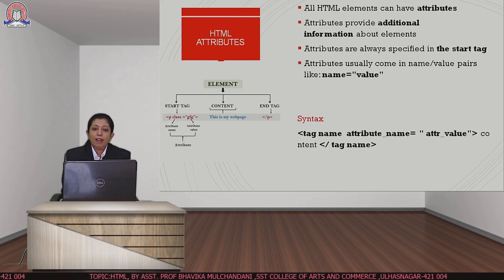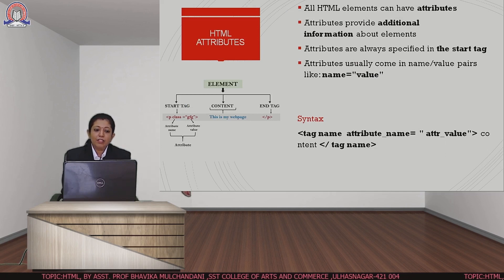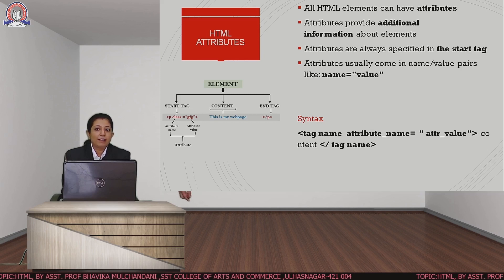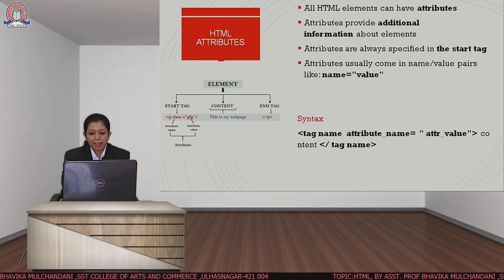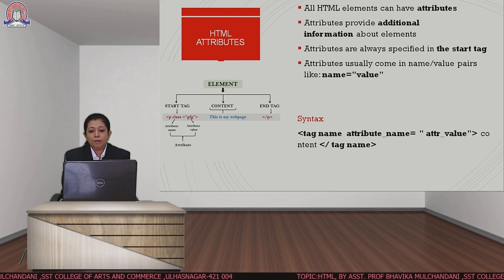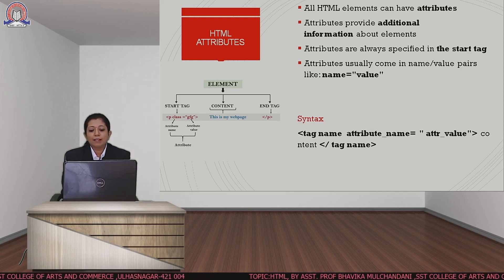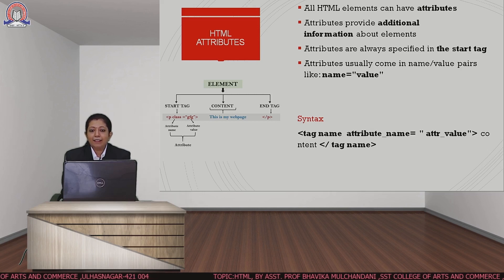Apart from tags, we have additional properties for the tags which are called attributes. Attributes are nothing but the additional properties of tags. They can be given along with the starting tag. The attributes are given by using a name and value pair. You can see on the screen the syntax of the tag and the attributes.